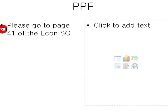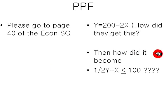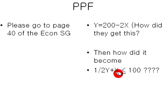Now let's go to page 40 of the Econ study guide. They got the algebraic expression Y equals 200 minus 2X. Then for the second one, they got 1 half times Y plus X is less than or equal to 100. Now, how the heck did they get that? I was going crazy for the past two days on how to figure that out.